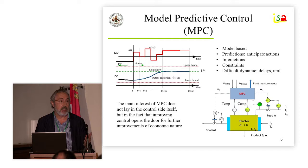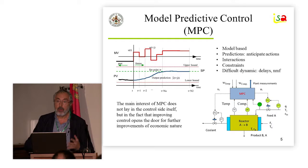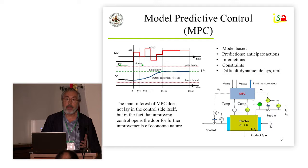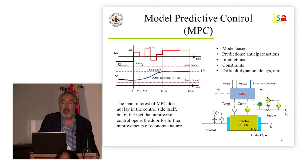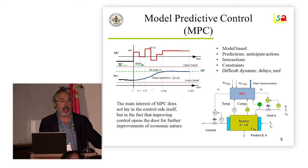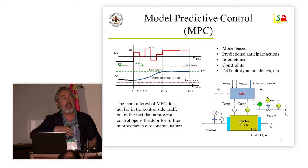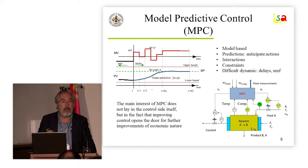The second step forward was given by the introduction of MPC. All of you know the fundamentals of MPC: you have a model in which you predict the future behavior, you can include the interactions between the different variables, and you can also explicitly consider constraints on the manipulated and the controlled variables. The quality of control clearly improved a lot — you were able to control the operation of a whole process unit, a distillation column, a reactor, and so on. The operators appreciate the fact that they don't have to worry continuously about the constraints.